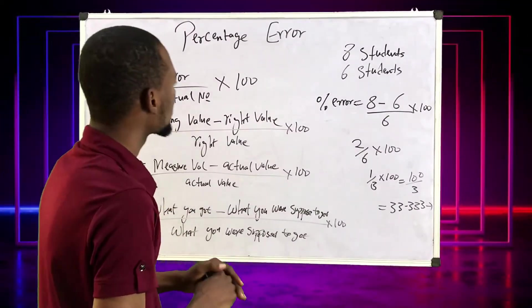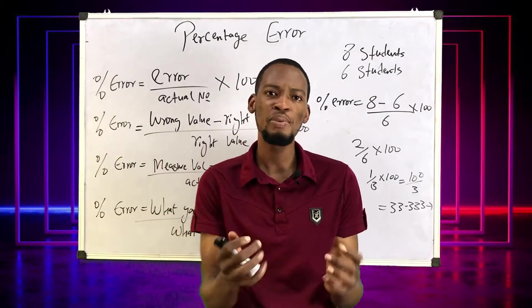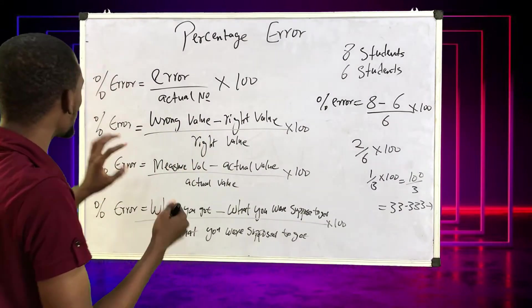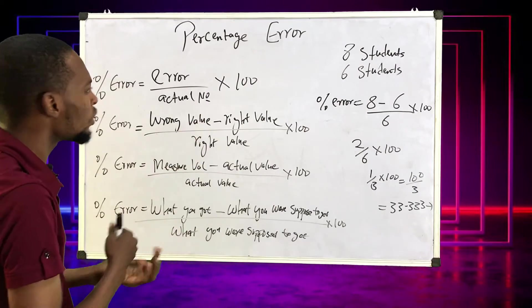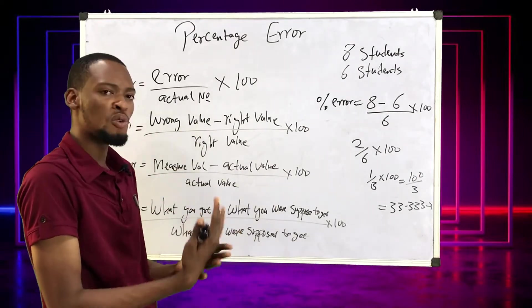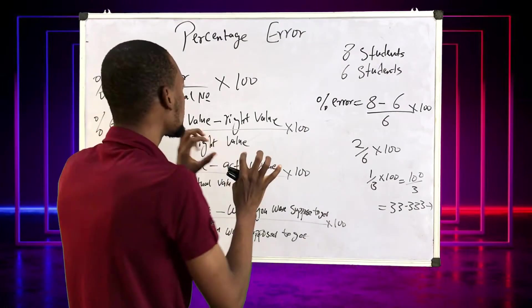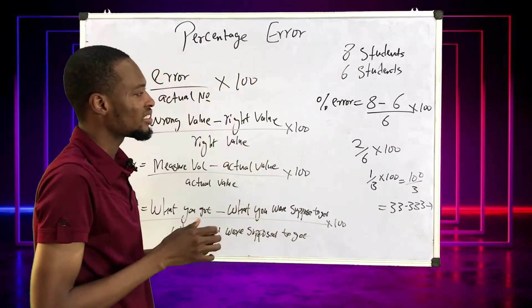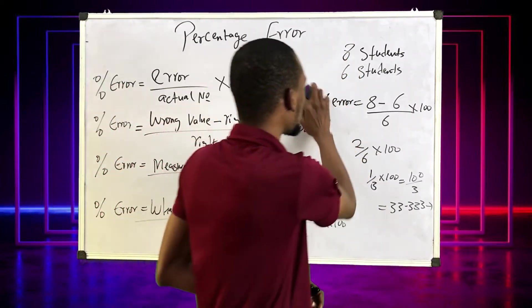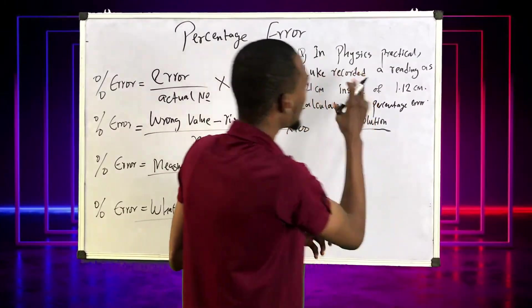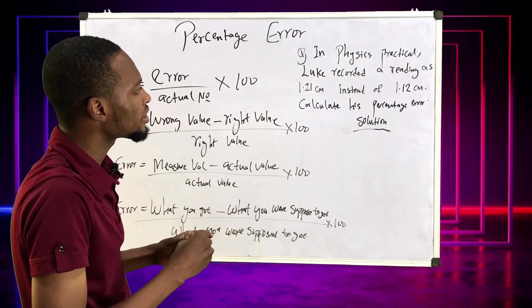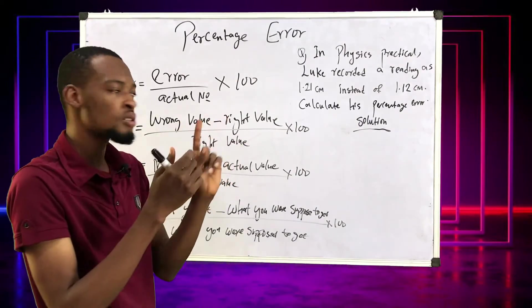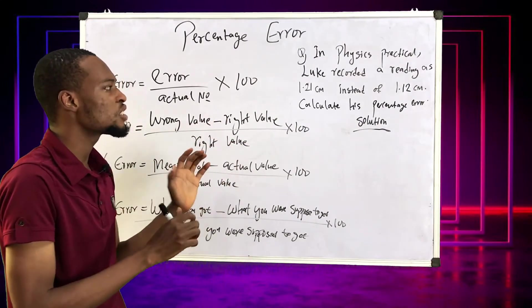With this, I'm sure you know what percentage error is — it's simply the error expressed as a percentage. Let me solve two more questions for you. Irrespective of the question or the wording, it's still the same formula. Look at this question: in a physics practical, Luke recorded a reading as 1.21 cm instead of 1.12 cm. Calculate his percentage error.